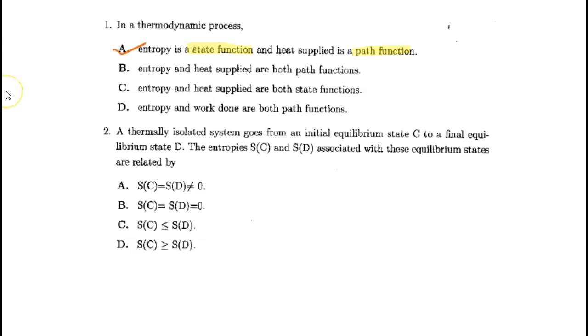Now for the second question. A thermally isolated system goes from an initial equilibrium state C to a final equilibrium state D.